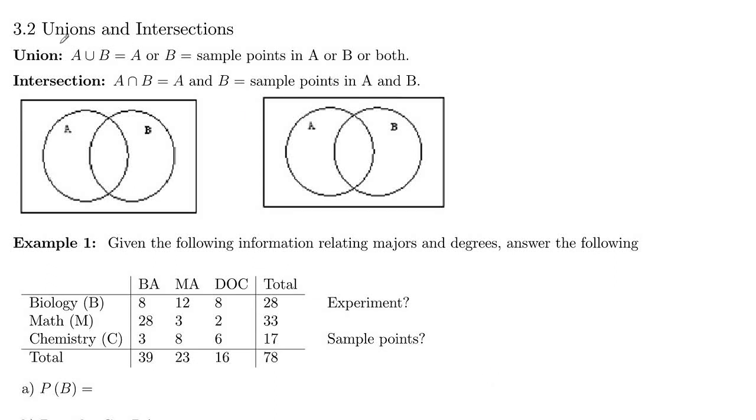Next, we want to be able to find probabilities of unions and intersections. Remember, if you have two sets, an A union B is all the elements that are in A or B or both. So for events, this is going to be all the sample points that are in A or B or both.